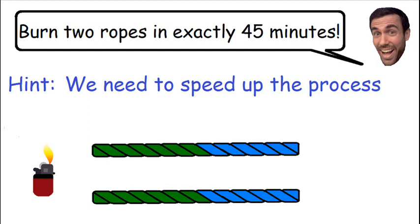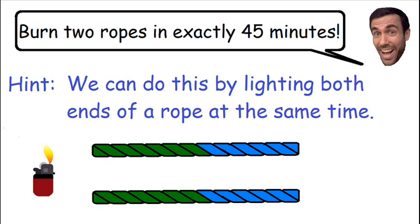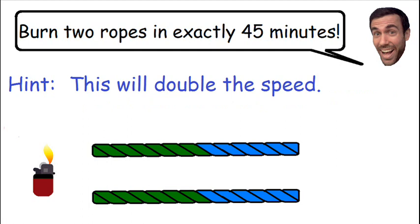So how do we speed up the process in which the ropes burn? Well, we can do this by lighting both ends of the rope at the same time. Lighting both ends of a rope simultaneously will double the speed in which the rope burns.